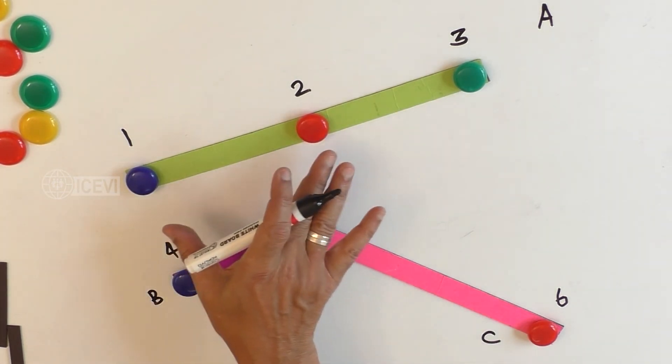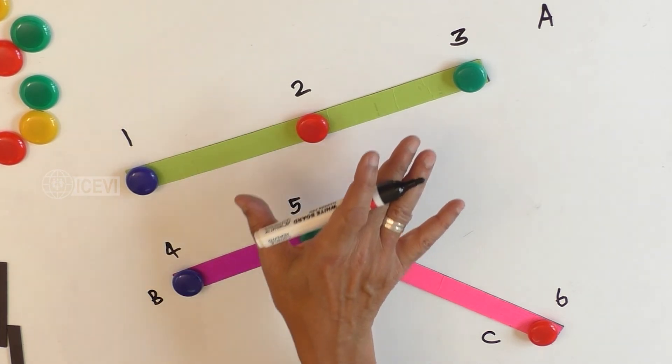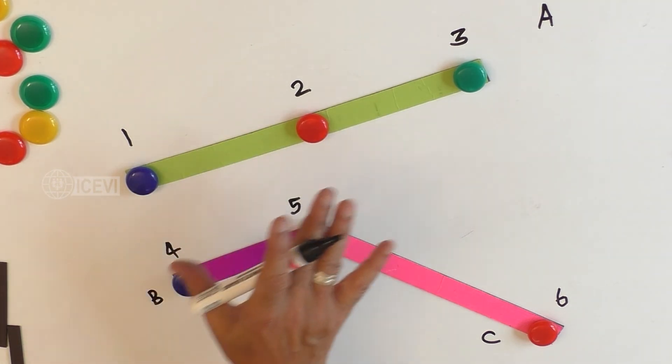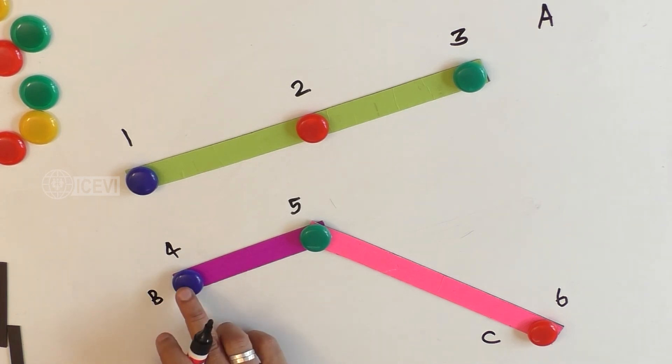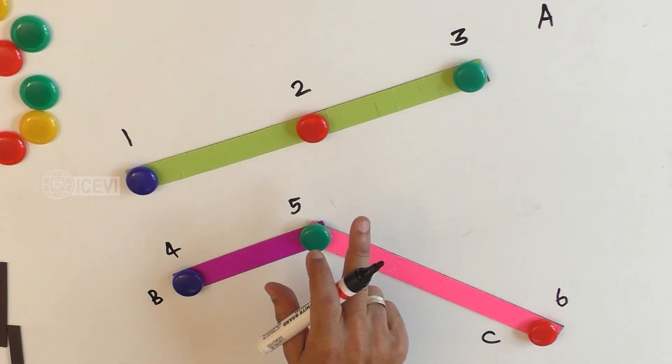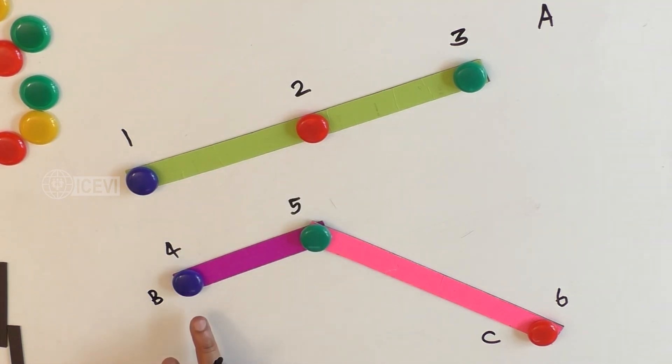These are called collinear points. If the third point is also on the same line, they are called collinear points.